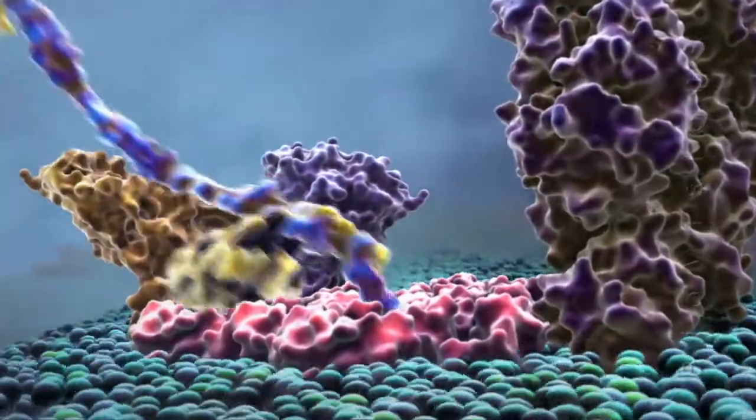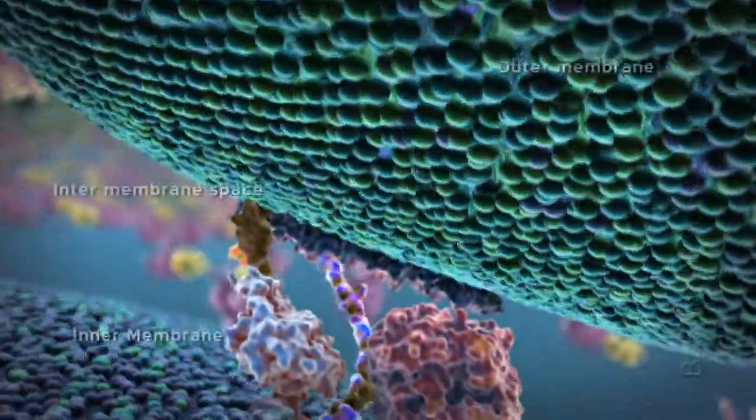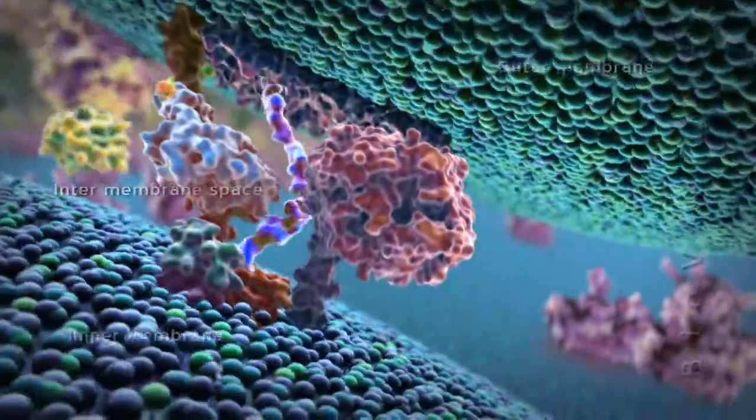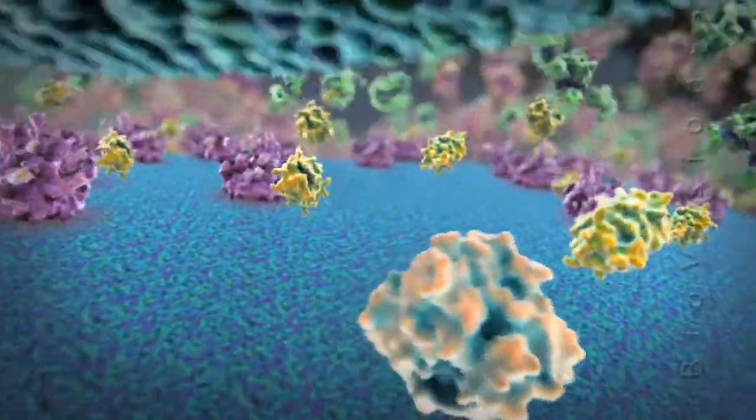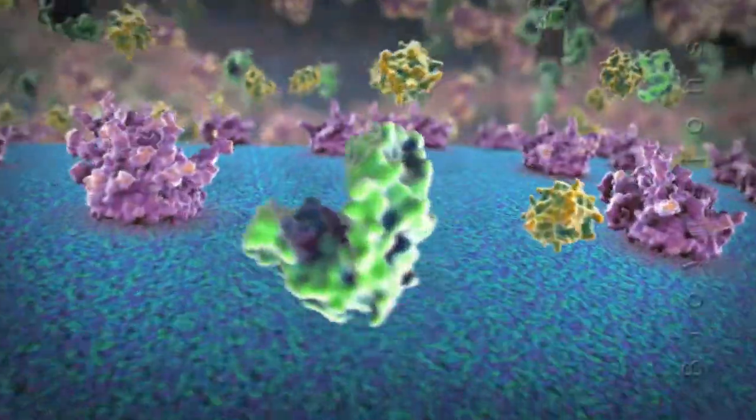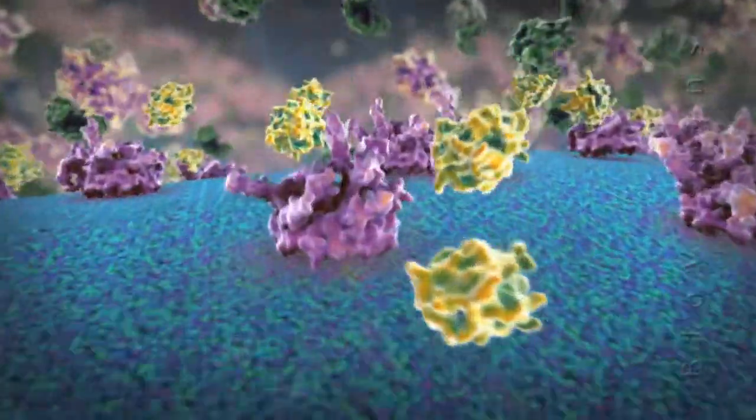The successful targeting of many proteins that reside in the intermembrane space requires translocator complexes from both the outer and inner membranes. After entering the intermembrane translocator, many of these proteins do not completely cross the membrane.